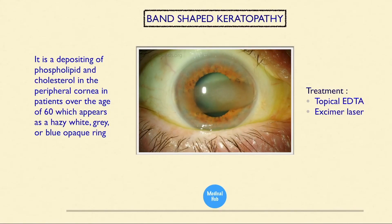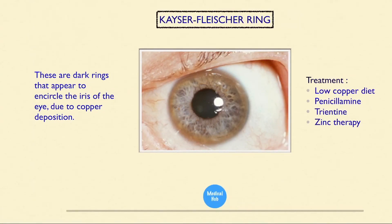This is band-shaped keratopathy — calcium deposits in the corneal epithelium and Bowman's layer, appearing as a hazy white, grey, or blue opaque band. Treatment is topical EDTA or excimer laser. This is Kayser-Fleischer ring — dark rings that appear to encircle the iris of the eye due to copper deposition. Treatment: low-copper diet, penicillamine, trientine, and zinc therapy.